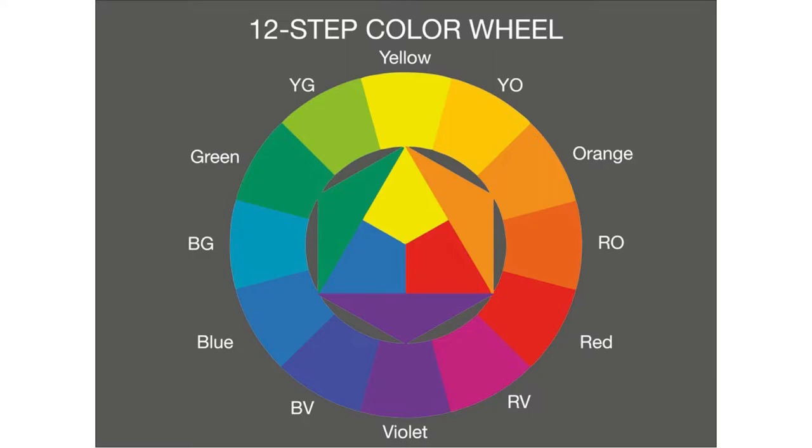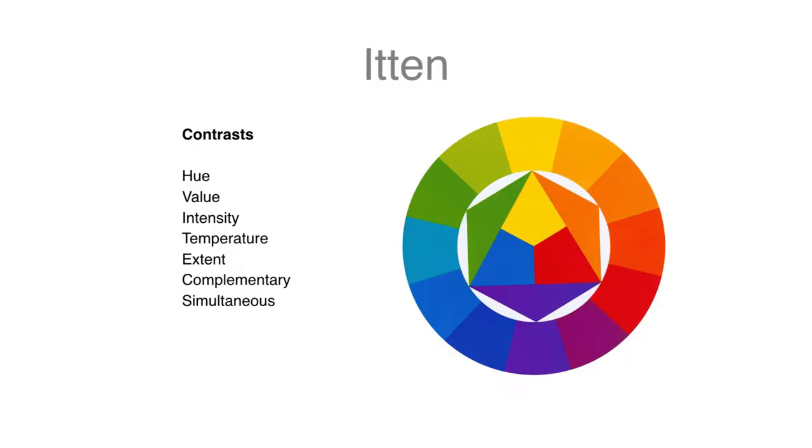And then the 12 tertiaries are mixtures of the primaries and the secondaries. And there is a standard sequence, a natural ordering of the hues, and everything is at full saturation, although not the same value. Itten also identified seven different hue contrasts, which work concurrently.